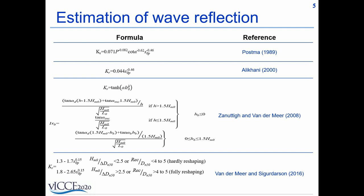Much later in 2000, Alikhani suggested a formula for reshaped berm breakwaters with slopes between 4 and 5 relating the wave reflection with wave steepness.